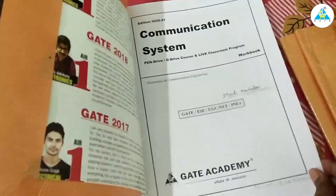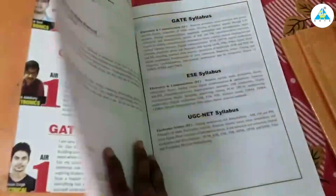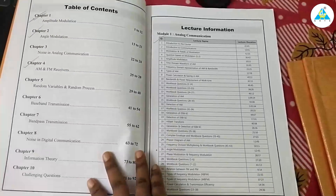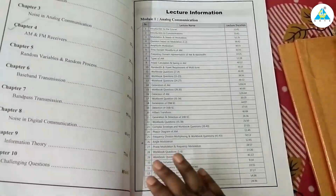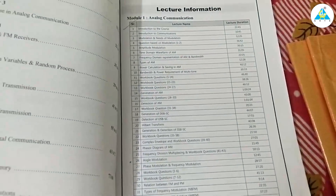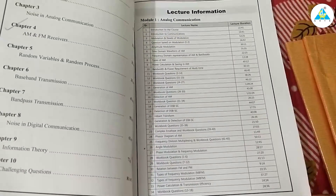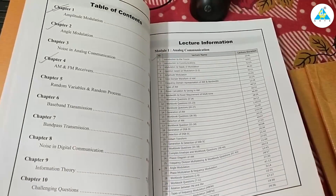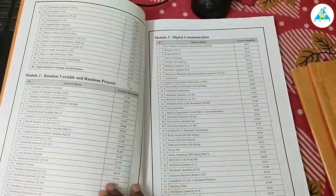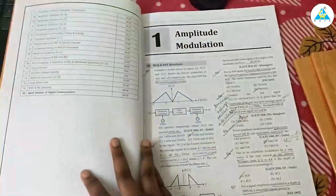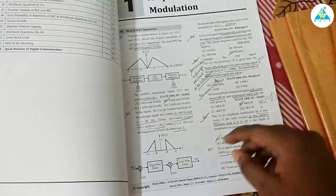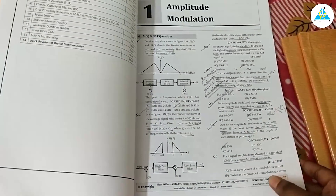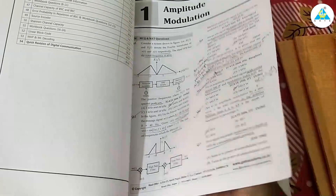First, I want to show the demonstration of the workbook. The first thing you can see is the syllabus of the full GATE exam and also the EC exam. Then you can see the full content of the subject, the major topics and minor topics, and along with this the time duration will be provided, which is really helpful.